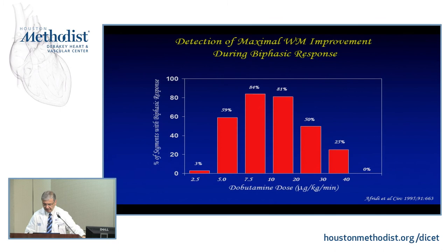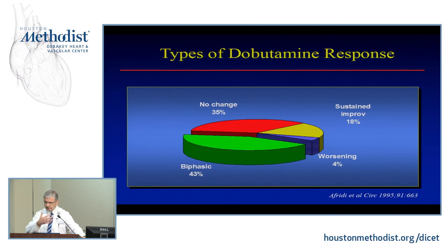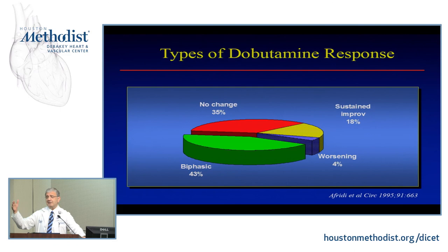This is from Dr. Imran Afridi — now in Dallas — who was our fellow about 22-23 years ago. This paper really put dobutamine investigation on the map because we used both low dose and high dose to examine responses. A biphasic response — improvement in function at lower dose then worsening — was seen. About 35% of segments had no change whatsoever, remaining akinetic. Sustained improvement occurred where function improved even at 40 mcg, indicating no ischemia despite baseline dysfunction.